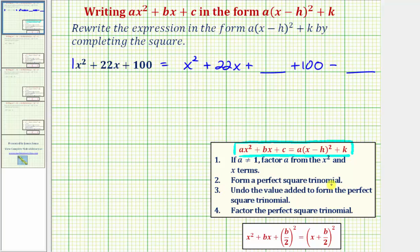So again step two we want to form a perfect square trinomial. For review we want to add b divided by two squared here where b is the coefficient of the degree one term or the coefficient of x. Notice here b is equal to positive 22 so we're going to add 22 divided by two squared which would be 11 squared which equals 121.